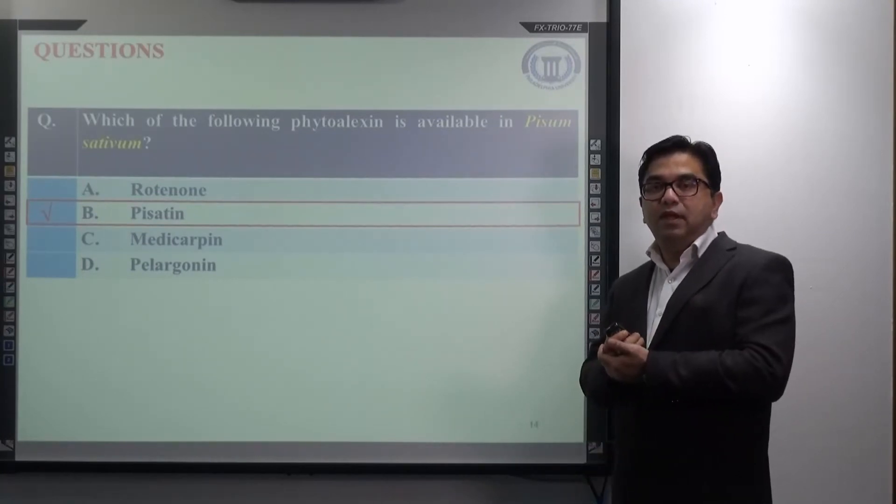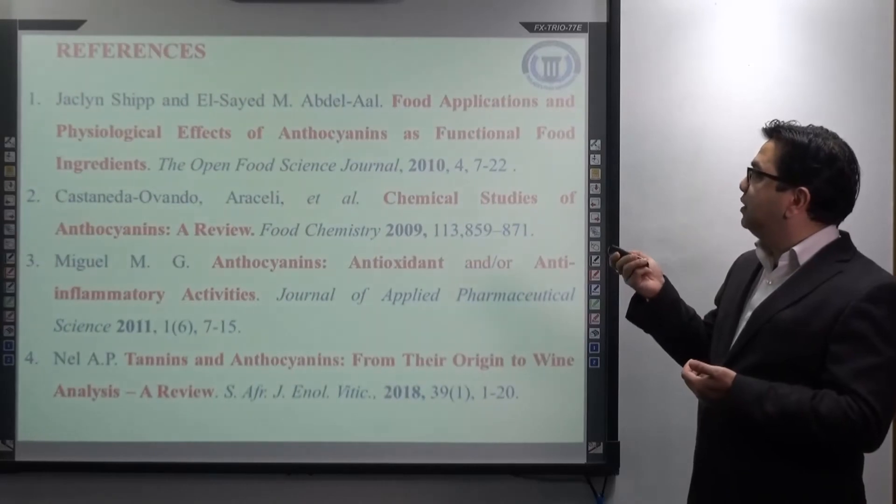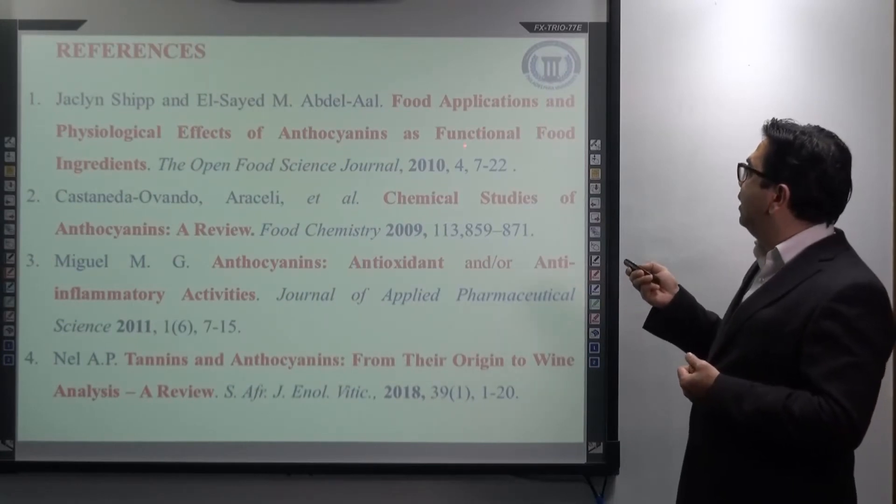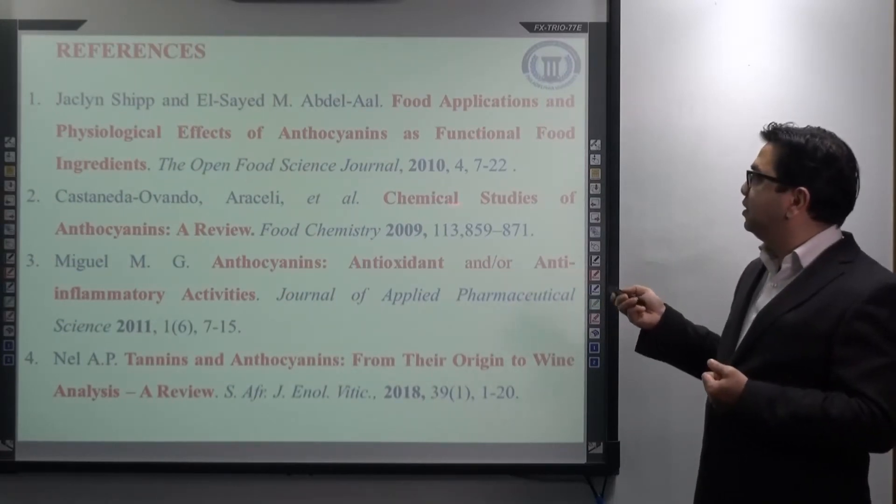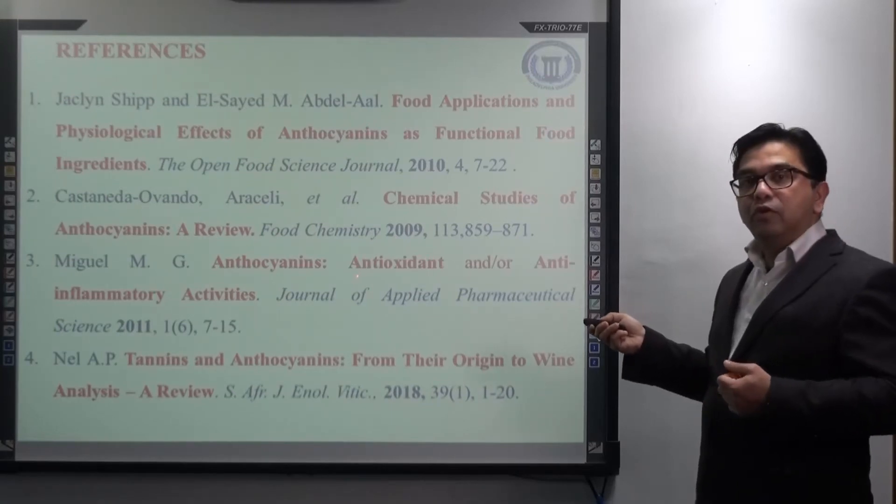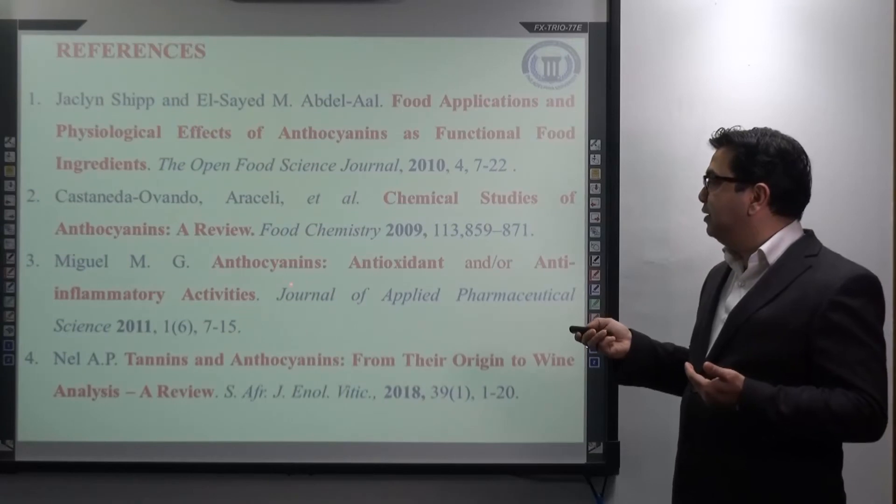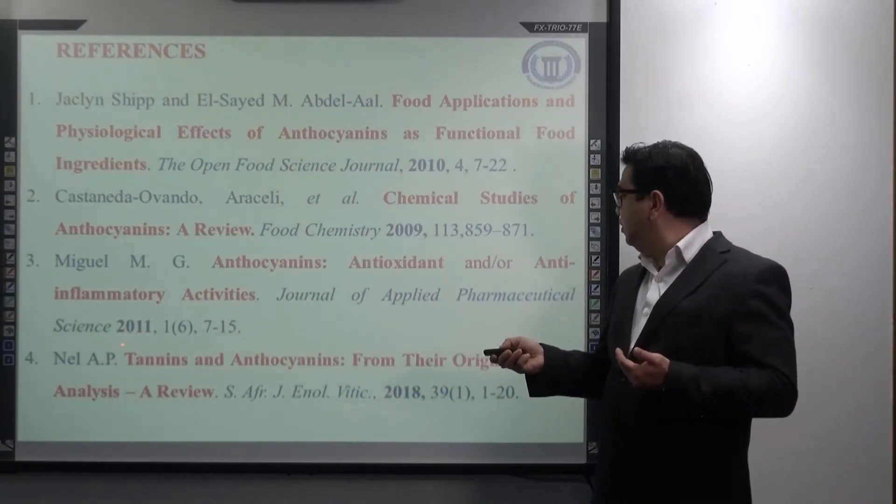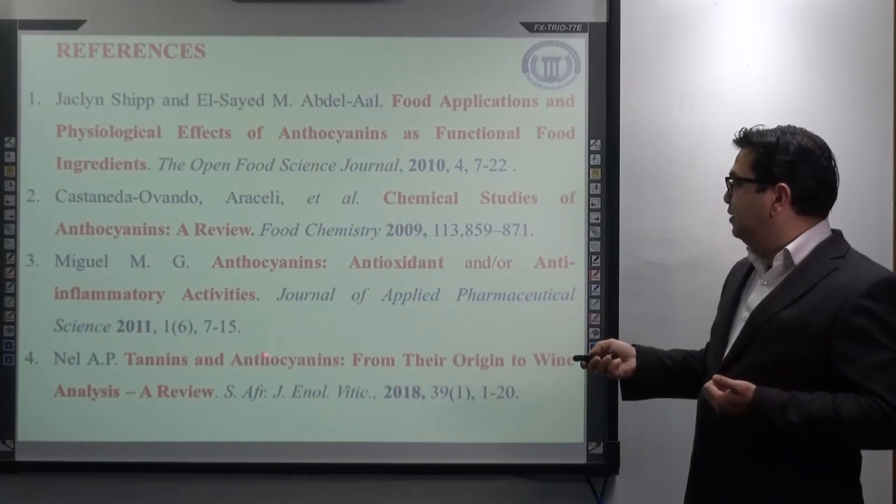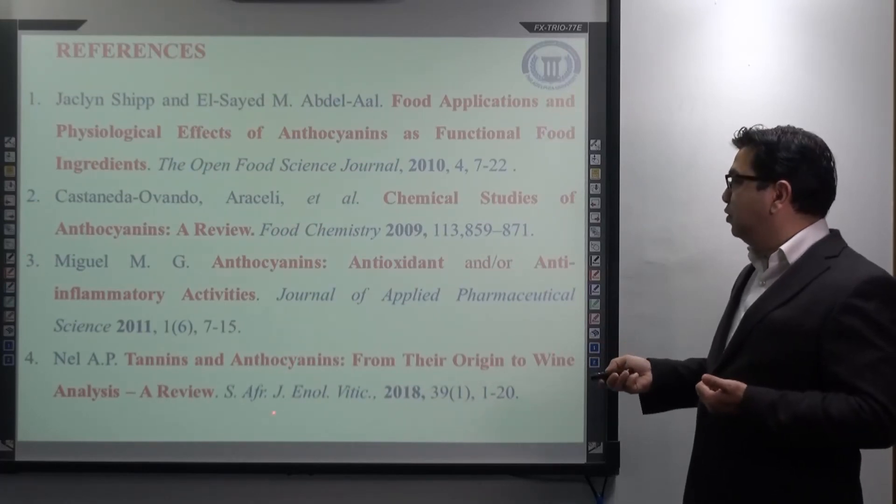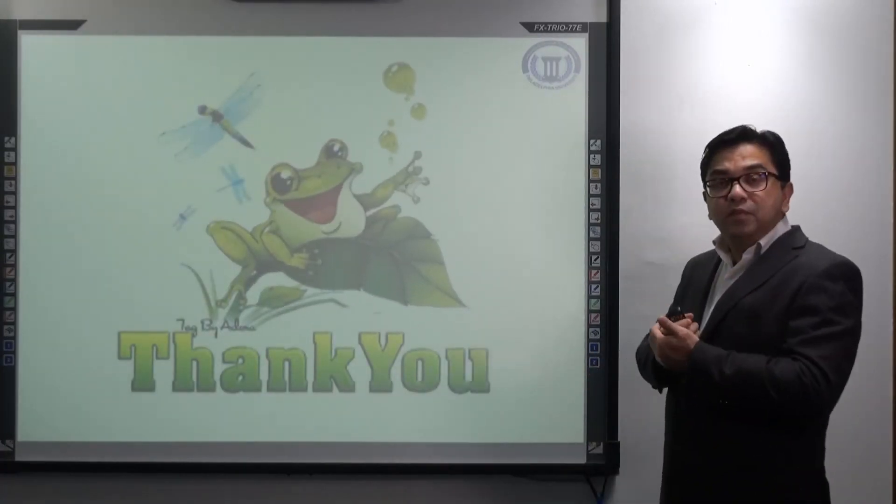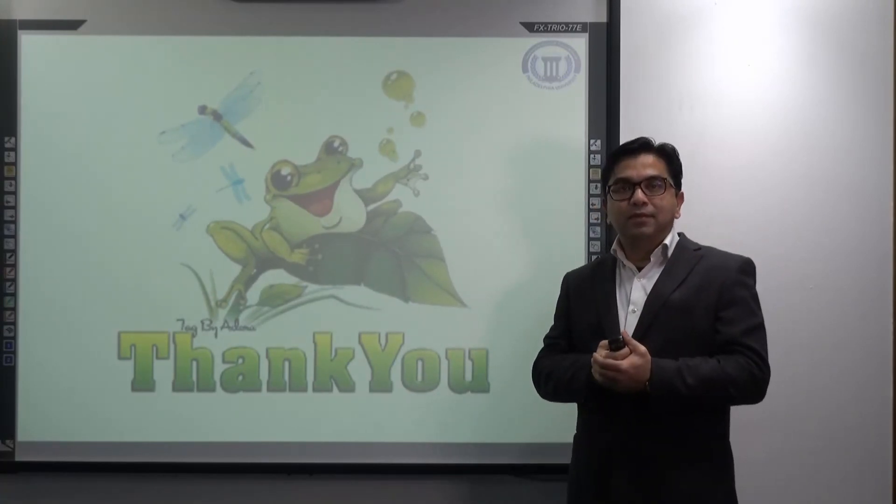So with this, I will finish my lecture. These are the references from where I have prepared my lecture. Mainly the food applications and physiological effect of anthocyanins as functional food ingredients and chemical studies of anthocyanins which is published in Food Chemistry 2009. Then again, if you want to know or study more about the antioxidant or anti-inflammatory activities of anthocyanins, you can also find it in the recent publication from the Journal of Applied Pharmaceutical Sciences that is published in 2011. And tannins and anthocyanins from their origin to wine analysis, a review article that is published recently last year, 2018. So with this, I have finished my lecture. Thank you for your attention. Have a nice day.